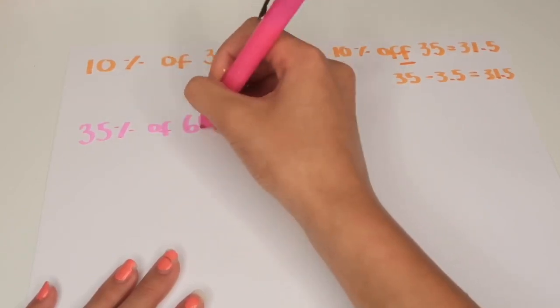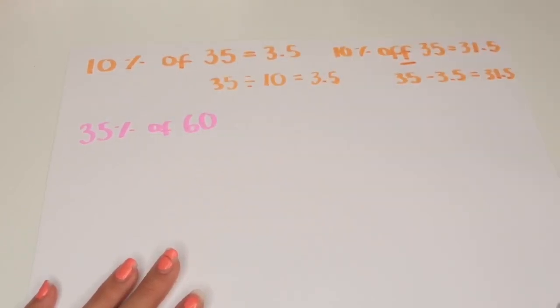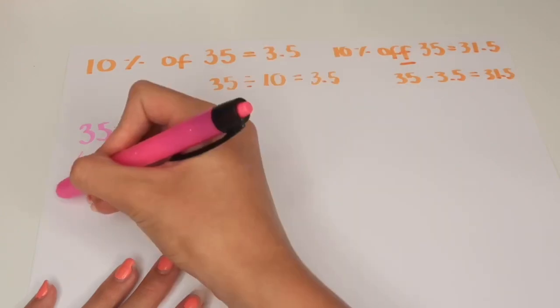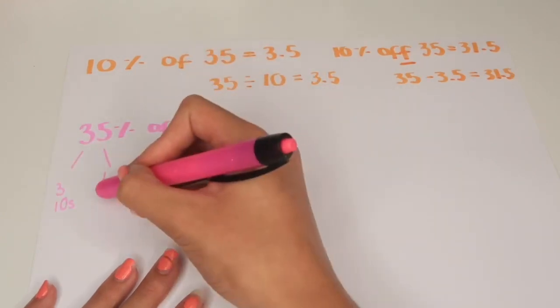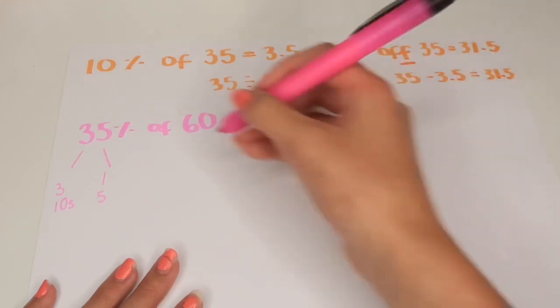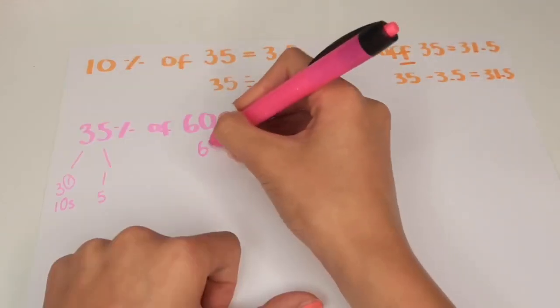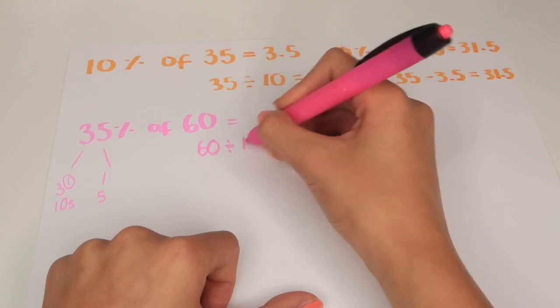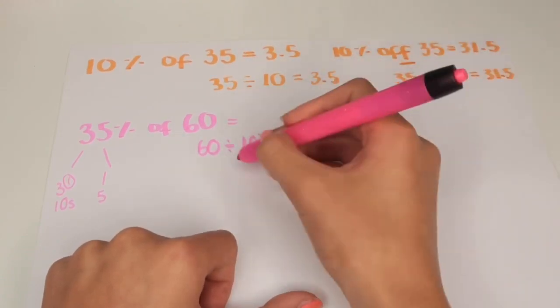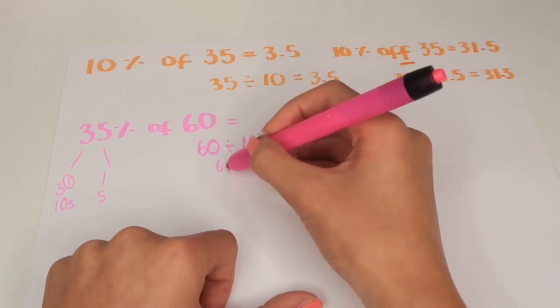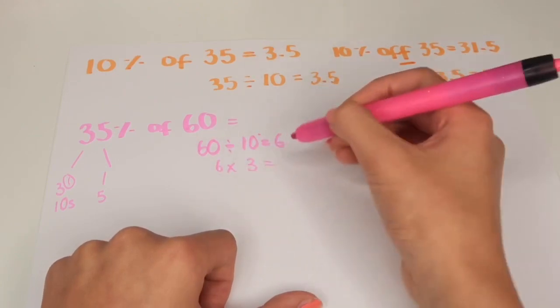35% of 60. As you can see, 35 has got 3 lots of 10s and 1 five. So first of all, like the question before, we would do 60 divided by 10 which is 6. Then we would times 6 by 3 because we have got 3 lots of 10%. This is 18.